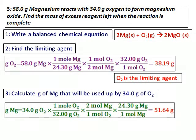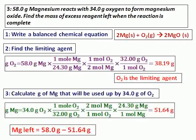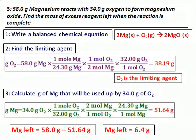I take 34 grams of oxygen, convert to moles using the molar mass, then using the equation convert to moles of magnesium, and then to mass of magnesium. The answer is 51.64 grams. So to react completely with 34 grams of oxygen, I need only 51.64 grams of magnesium. I have 58 grams, therefore the amount of magnesium left over is 58 minus 51.64, which equals 6.36 grams.